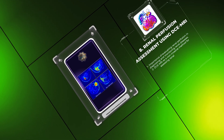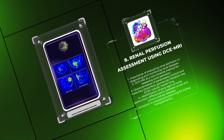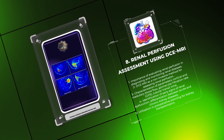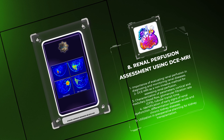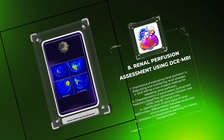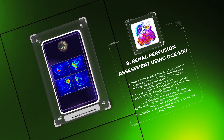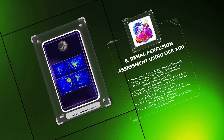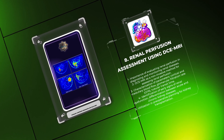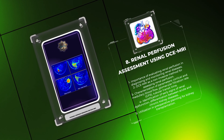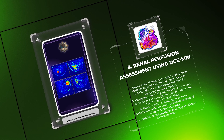The evaluation of renal perfusion is essential in diagnosing and monitoring renal diseases. DCEMRI provides a non-invasive method for assessing renal perfusion by characterizing parameters such as cortical and medullary blood flow, glomerular filtration rate (GFR), and tubular transit time. This information can help identify early signs of renal dysfunction, differentiate between acute and chronic kidney diseases, and guide therapeutic interventions. Furthermore, DCEMRI can be utilized in preoperative planning for kidney transplantation, aiding in graft selection and long-term prognostic evaluation.